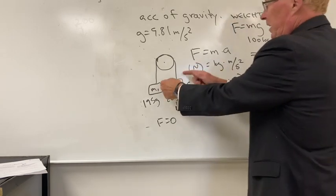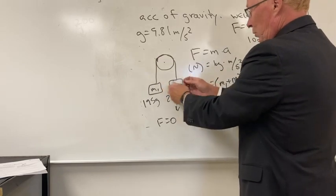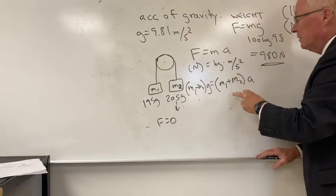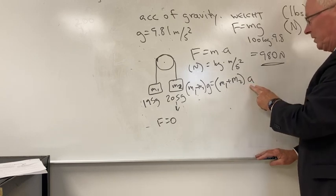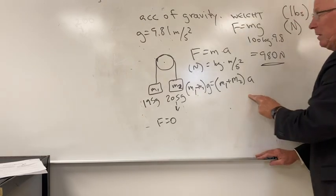So force would be M1 minus M2 times G, but since they are connected together, as this pulls along with it, they are stuck together, so the mass would be M1 plus M2.